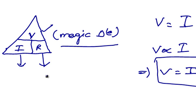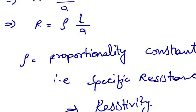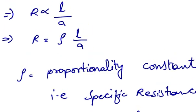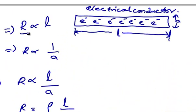From Ohm's law we also know that resistance is directly proportional to the length of the conductor, and resistance offered by the conductor is inversely proportional to the area of cross section of the conductor.